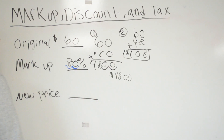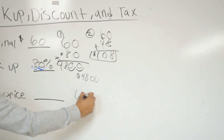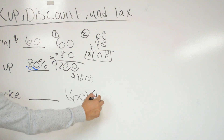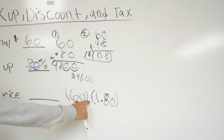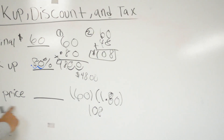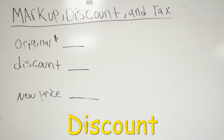Another way to solve it is to focus on what we're actually going to be paying. Since the markup is 80%, we know we're paying more than 100%, so we multiply the original price of $60 by 1.80. 60 times 1.80 gives us the same answer: $108.